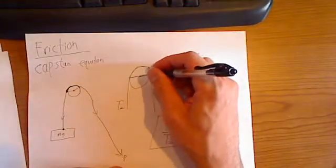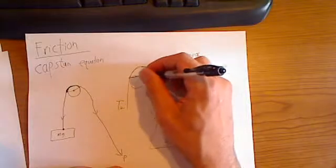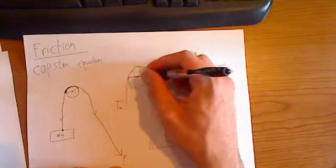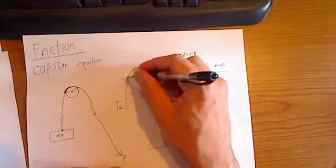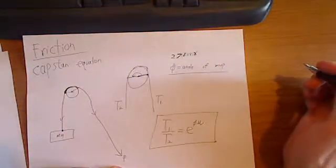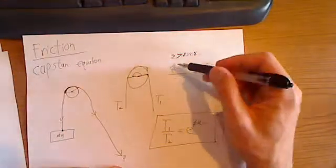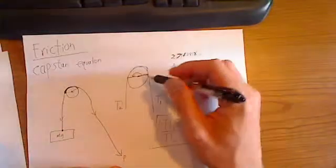Angle of wrap. So that would be how much length is engaged on this drum here. So, in this case, it's a little bit less than 180. You can have angles that are much greater than a full 360.